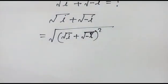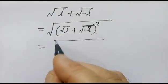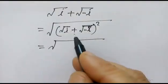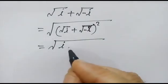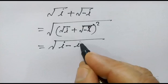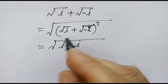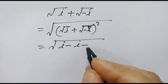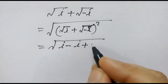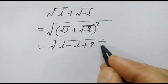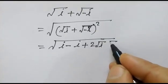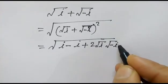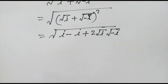This is i. In the next step we will expand this: i or iota minus i, first term square plus second term square plus two into first term into second term, two times square root of iota times square root of minus iota.